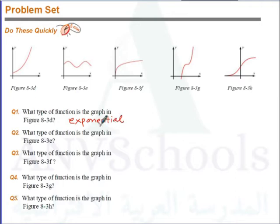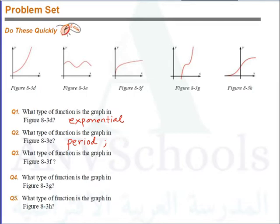What type of function is the graph in Figure 8-3E? This is a function that is oscillating in motion — it goes through periods, so this is periodic. A type of function like this is y equals sine x or y equals cosine x.